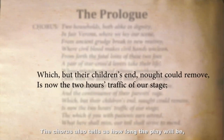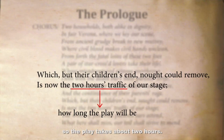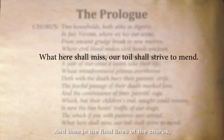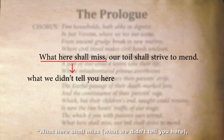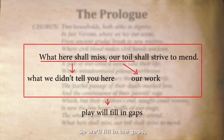The chorus also tells us how long the play will be — it says there are 'two hours traffic of this stage,' so the play takes about two hours. Then in the final lines, the chorus says that if you watch the play, they will tell you how this happened. 'What here shall miss' — what they didn't tell you — 'our toil shall strive to mend.' So they'll fill in the gaps, even though you already know what's going to happen.